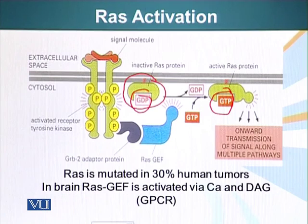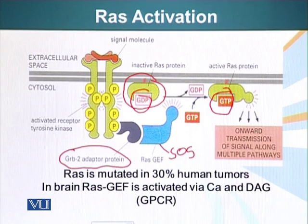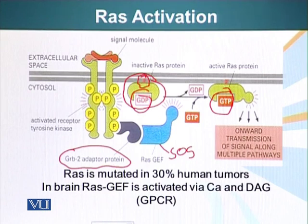Since RAS cannot bind the receptor directly, the docking sites recruit adapter proteins. In this case, GRB2 is the adapter protein — it binds the receptor. When this binding occurs, there is a conformational change in GRB2 which allows another molecule called SOS, or RAS-GEF, to bind the complex. SOS is then in close vicinity of RAS near the plasma membrane, where RAS resides. Like G protein, RAS has a hydrophobic domain — it is covalently linked to a hydrophobic molecule that anchors it to the underside of the plasma membrane.